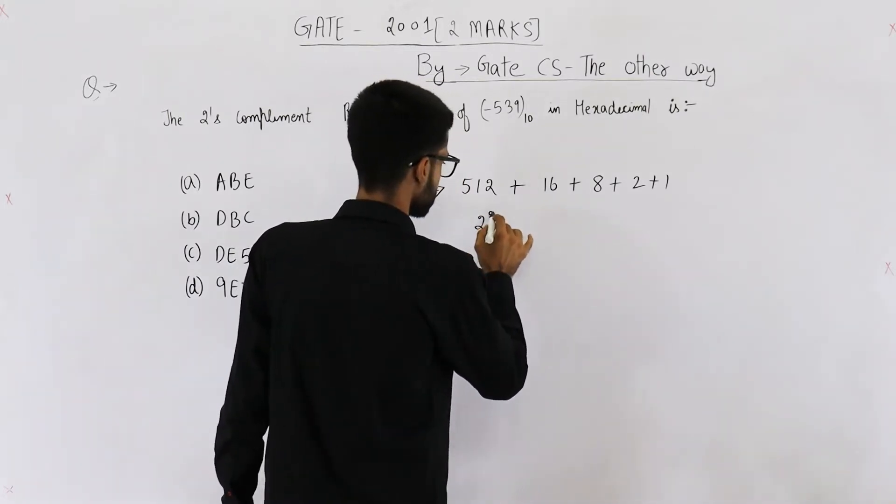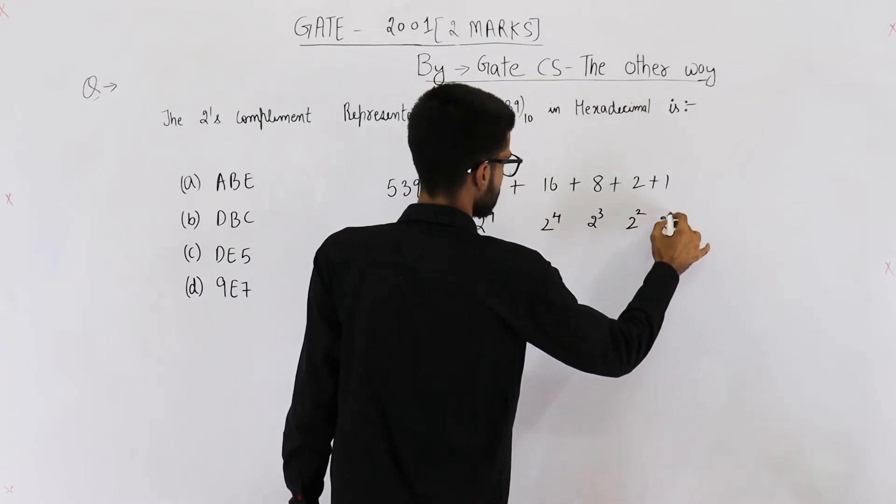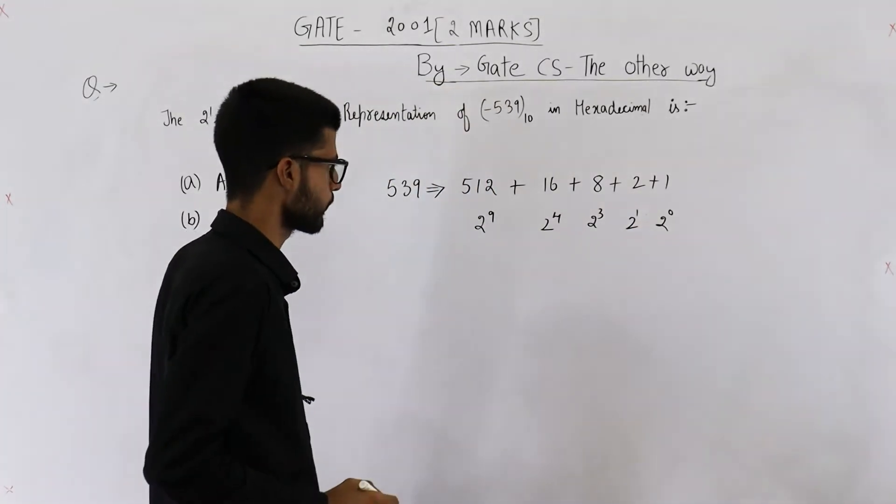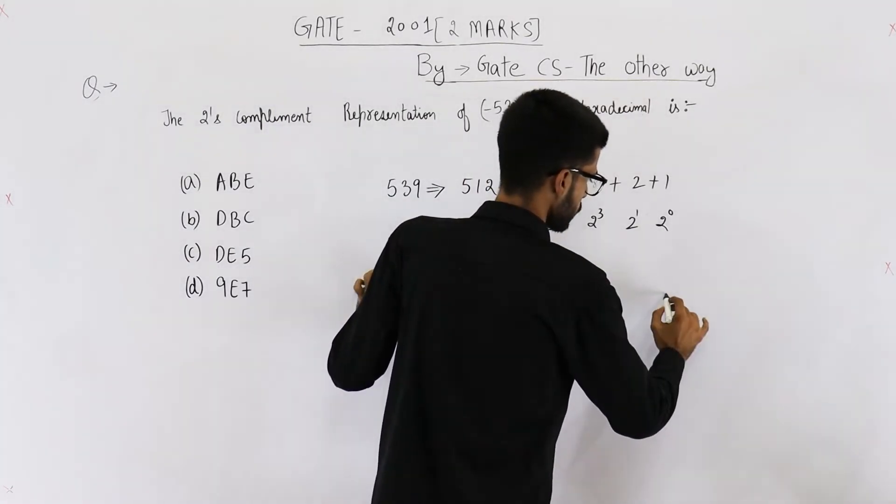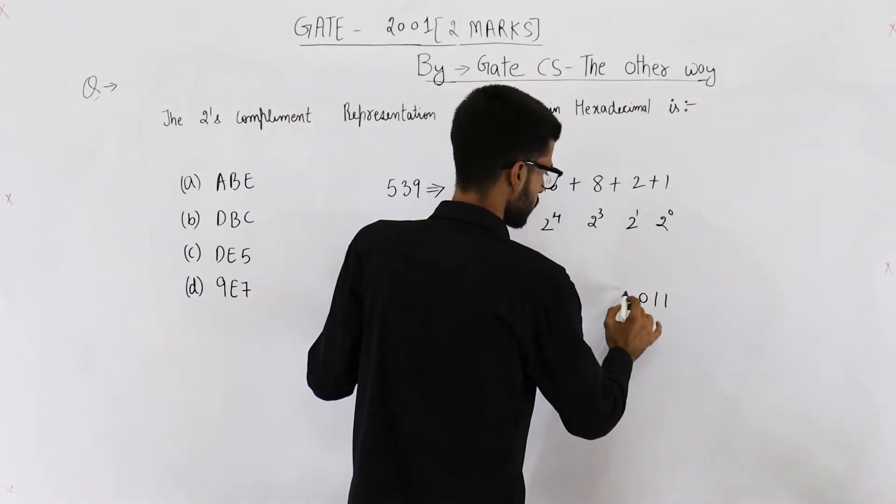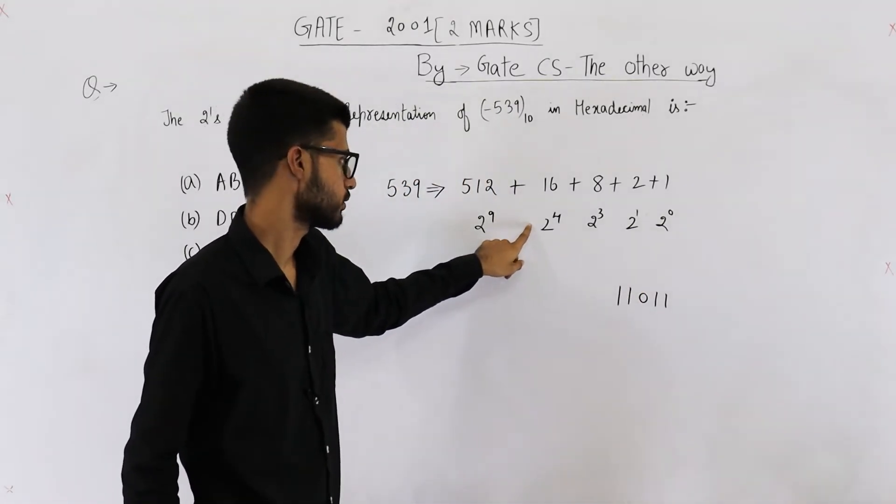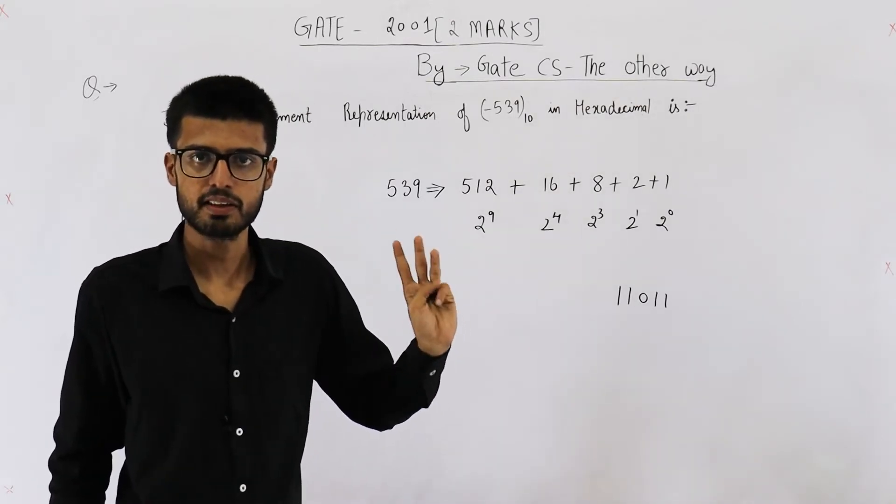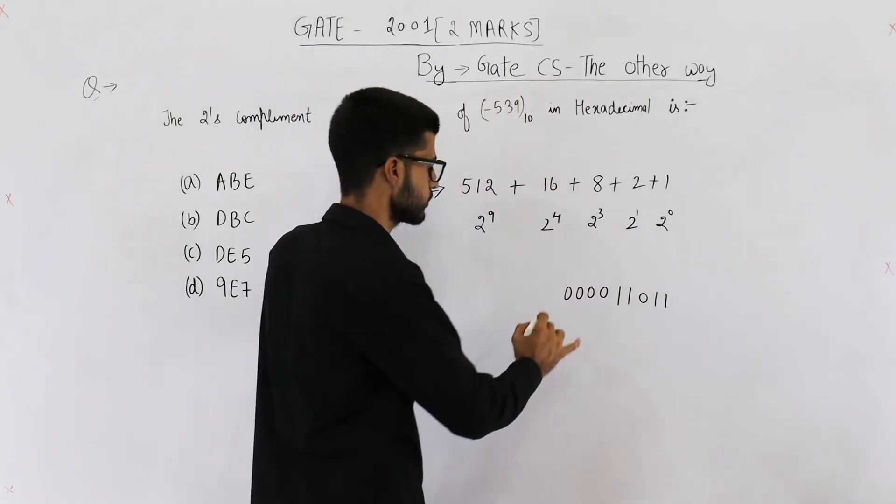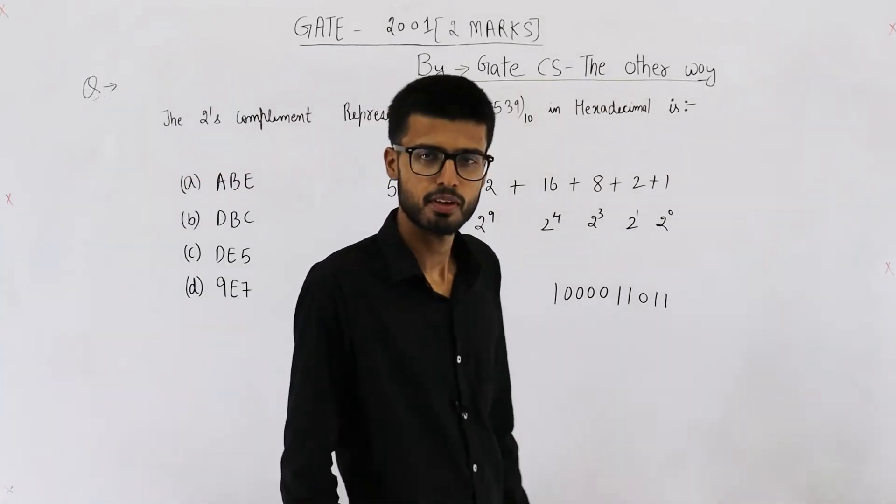This is 2 power 9, then 2 power 4, power 3, 2 power 2, and 2 power 1, this is 2 power 0. So you can see bit for 2 power 0 is high, bit for 2 power 1 is high, then 2 power 2 is low, then 2 power 3 is high, 2 power 4 is high. After that you have 4 zeros for 2 power 5, 6, 7, 8. So we have 4 zeros then 2 power 9 is 1.